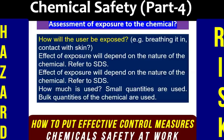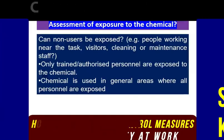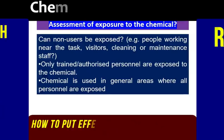The effect of exposure will depend on the nature of the chemical, and you can also refer to the safety data sheet. For higher or lower exposure, consider how much of the chemical is used — small quantities or bulk quantities. Can non-users be exposed? For example, people working near the task, visitors, or cleaning and maintenance staff. Or only trained, authorized personnel are exposed to the chemical. The chemical may also be used in general areas where all personnel are exposed.